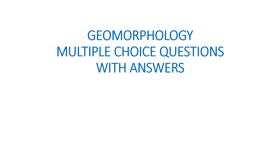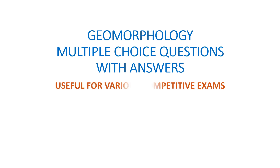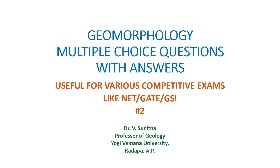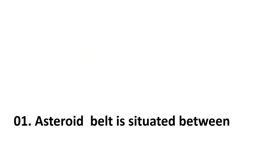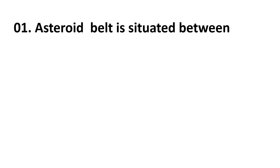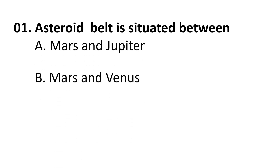Geomorphology multiple choice questions with answers — useful for various competitive exams like CSRNET, GATE, GSI, and other exams. Welcome to the second set. Coming to the first question: the asteroid belt is situated between — choices are: A) Mars and Jupiter,